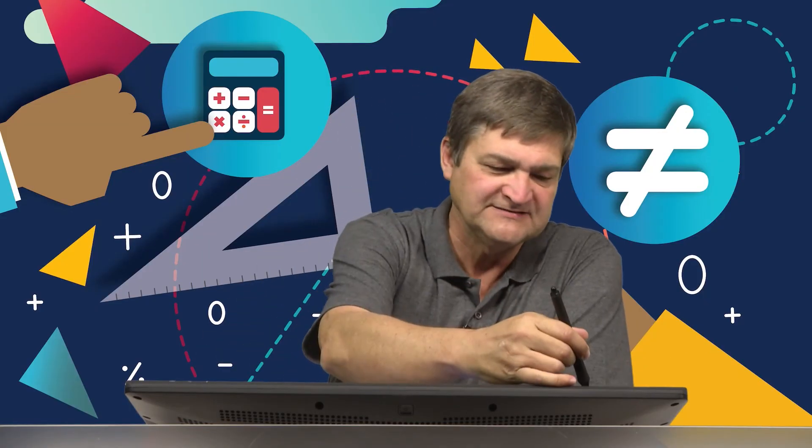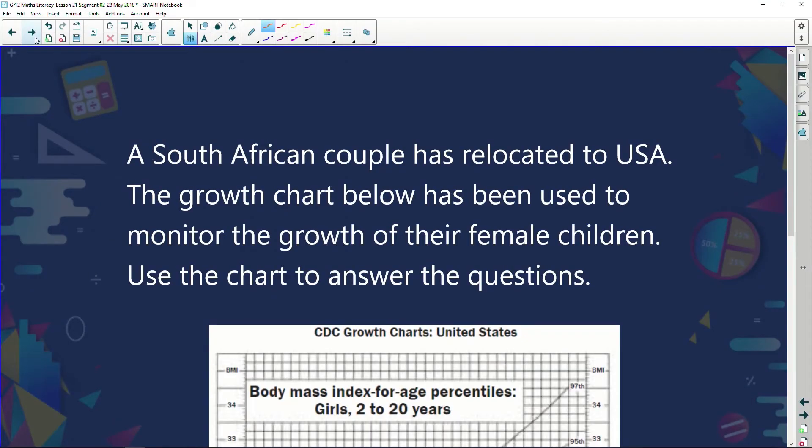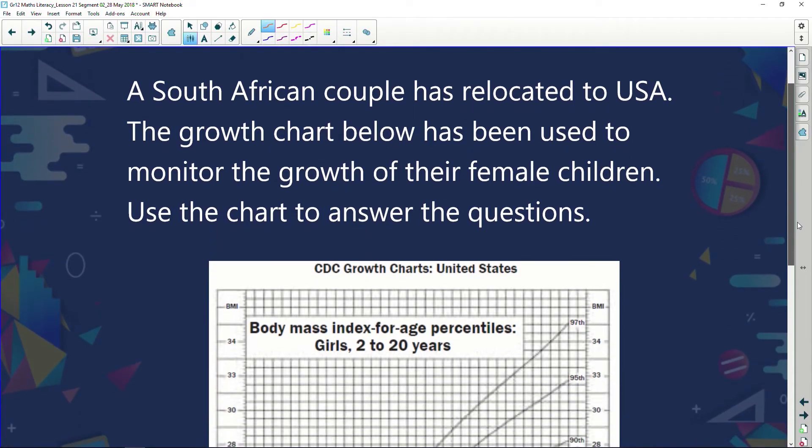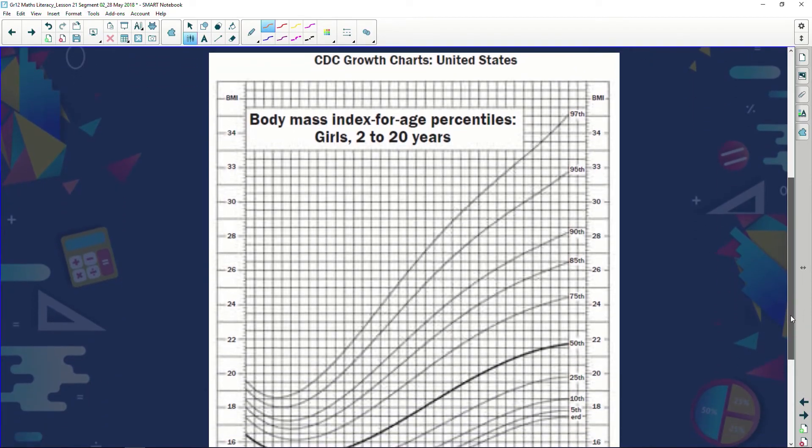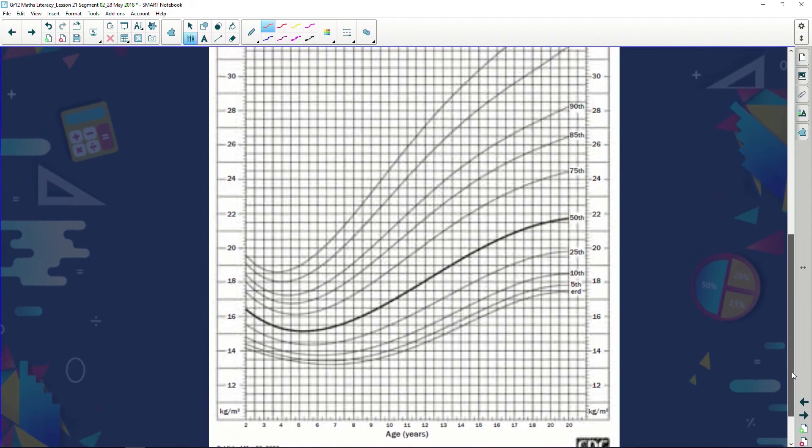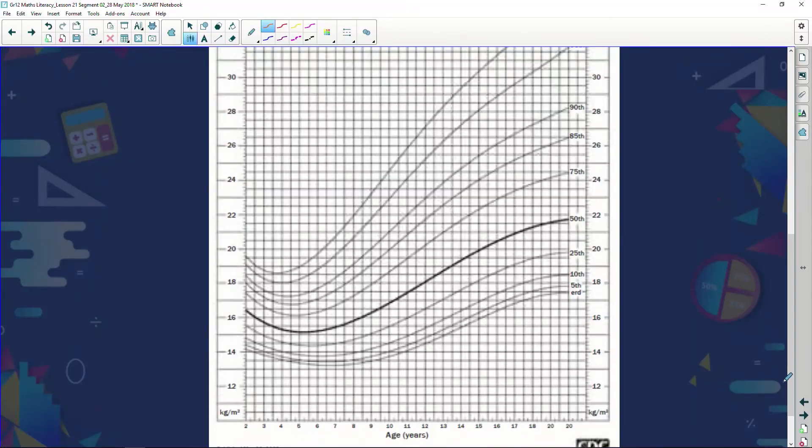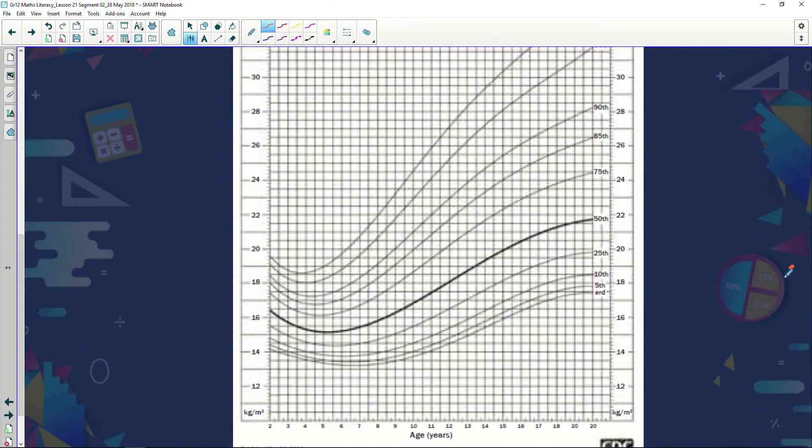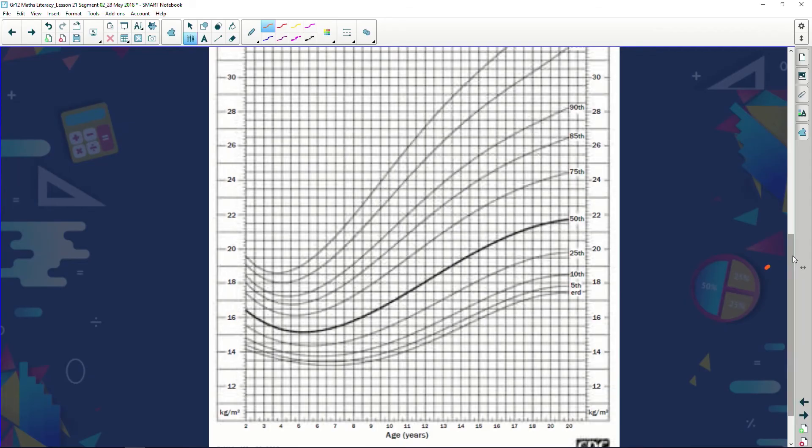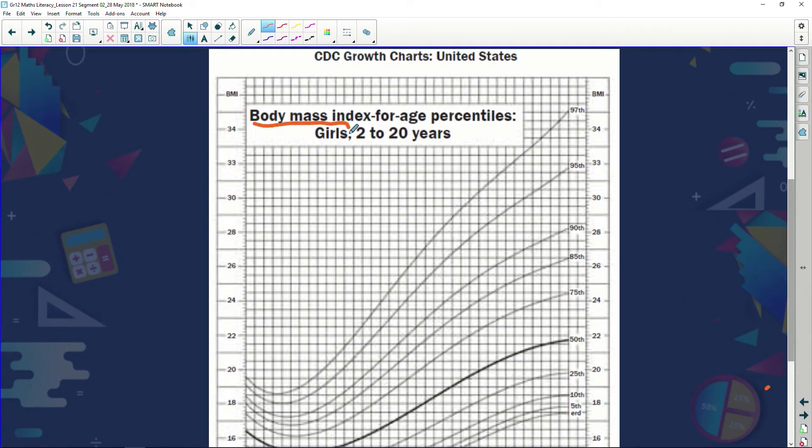Now how do we take this BMI and apply it to percentiles? A South African couple has relocated to the United States of America. The growth chart below has been used to monitor the growth of their female children. Use the chart to answer the following questions. Now guys, the first time you see a graph like this, you go into cardiac arrest because there is just so much information going on - lines going up, lines going across, squiggly lines all over the place. You look at this and say, what on earth is going on here? It does get complicated, so let's try and have a look.